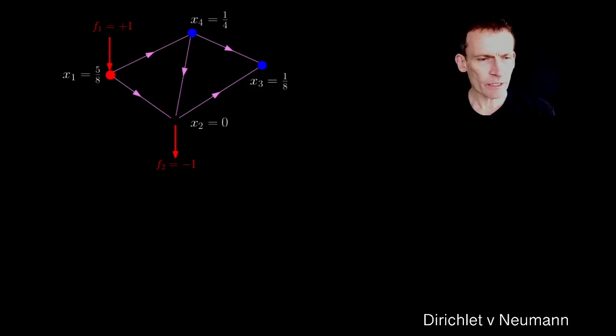And what I had to find there was, having grounded node 2 to set x2 as 0, I found values of x1 to be 5 eighths, x3 to be 1 eighth, and x4 to be 2 eighths, or a quarter.